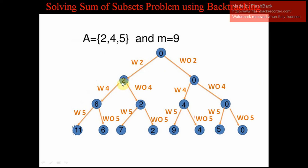Now at node 2, we consider the next element which is 4. We create two branches: one with 4 and one without 4. When considering with 4, we already have 2, so 2 plus 4 gives us 6. When not considering 4 (without 4), we already have 2, so 2 plus 0 gives us 2.